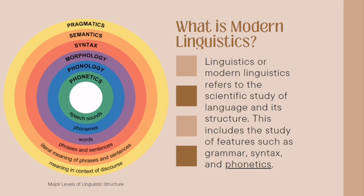First, we have phonetics, which is the speech sound. Next is phonology, which is the phonemes. We also have morphology, which is the words. And syntax, which is the phrases and sentences. Then semantics, which is the literal meaning of phrases and sentences. And the last one is pragmatics, which is the meaning in context of discourse.